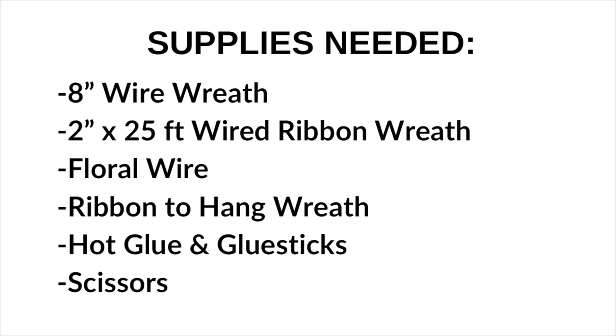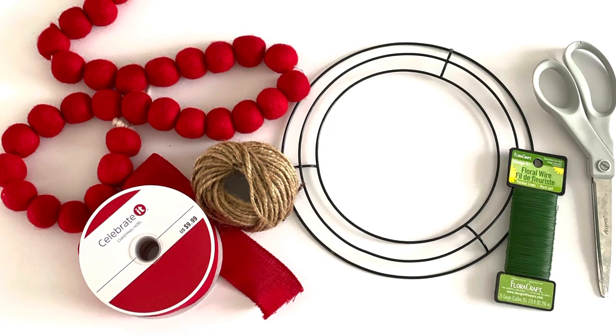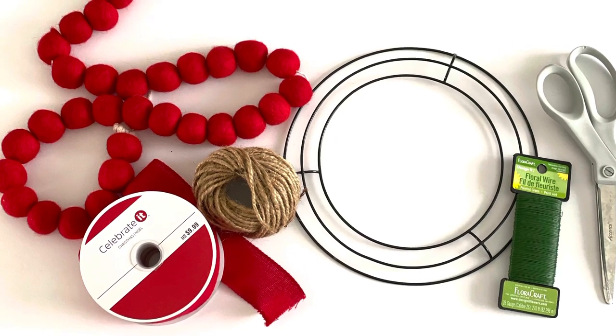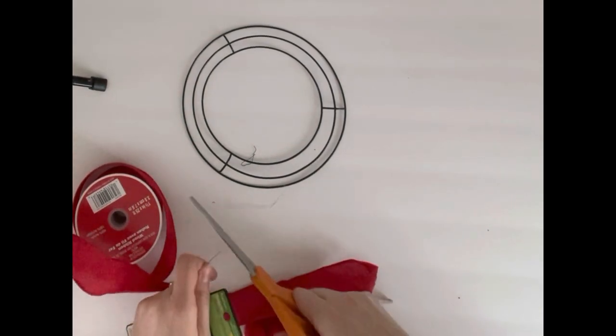To make this mini wreath you're going to use an 8 inch wire wreath form and ribbon that is 2 inches by 25 feet. Start by taking your floral wire and just cutting off a small piece.